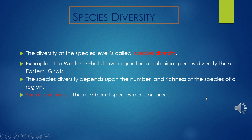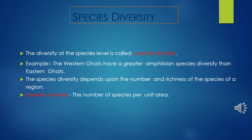The diversity at the species level is called species diversity. Western Ghats have greater amphibian species diversity as compared to Eastern Ghats. Species diversity is the variety in the number and richness of species of a region. The number of species per unit area is called species richness. The number of individuals of different species represents species equability. Communities where species are represented by more or less equal numbers exhibit evenness, while those where one or more species dominate show unevenness. Species diversity is the product of both species richness and evenness, i.e., species richness weighed by species evenness.